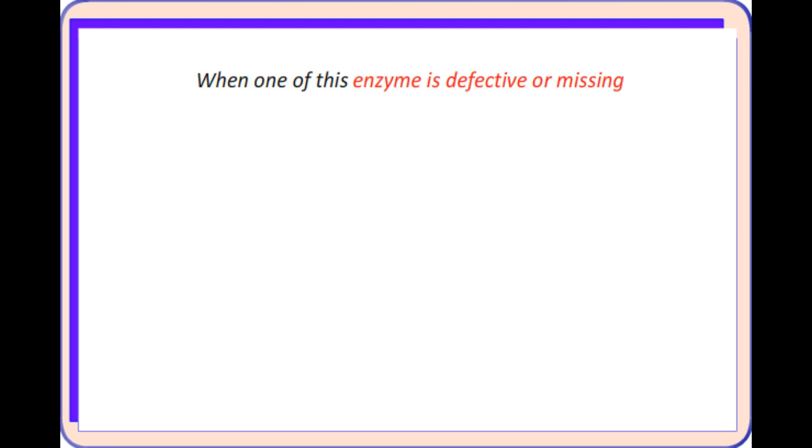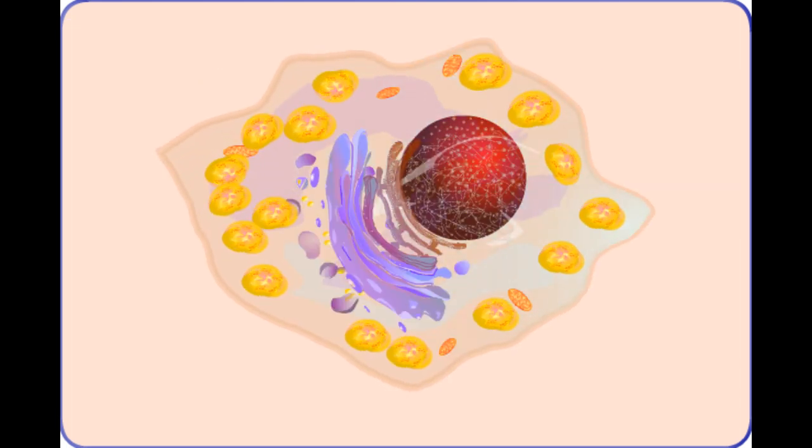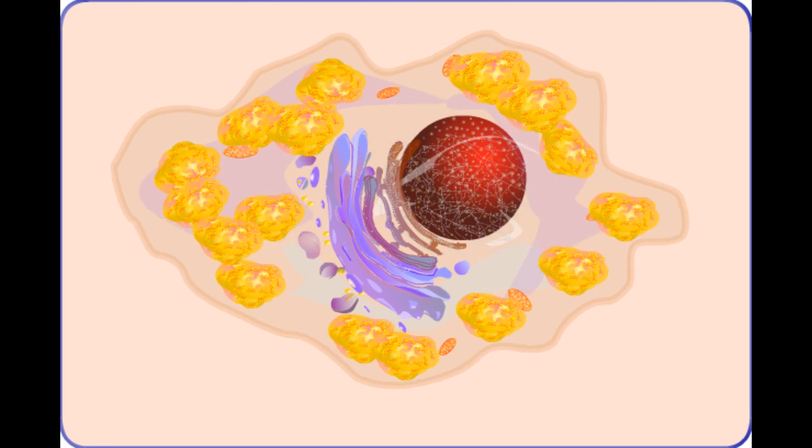When one of these enzymes is defective or missing, it results in deficient processing of the substrate which in turn leads to the accumulation of the relevant substrate within the lysosome and ultimately within the cell.